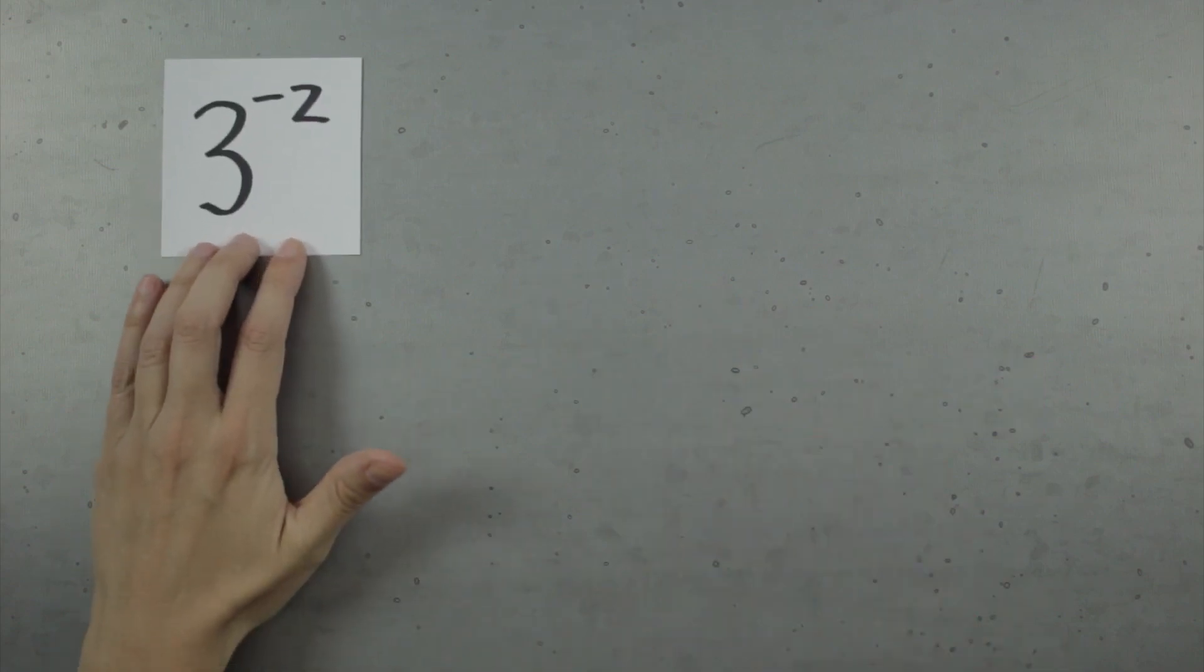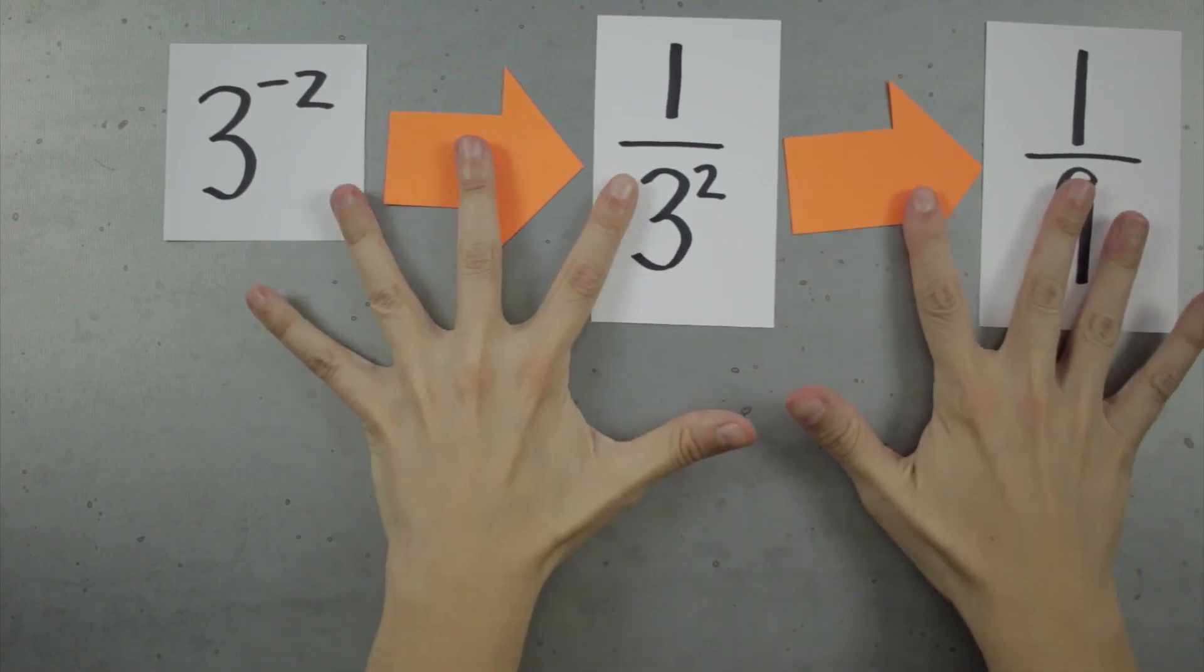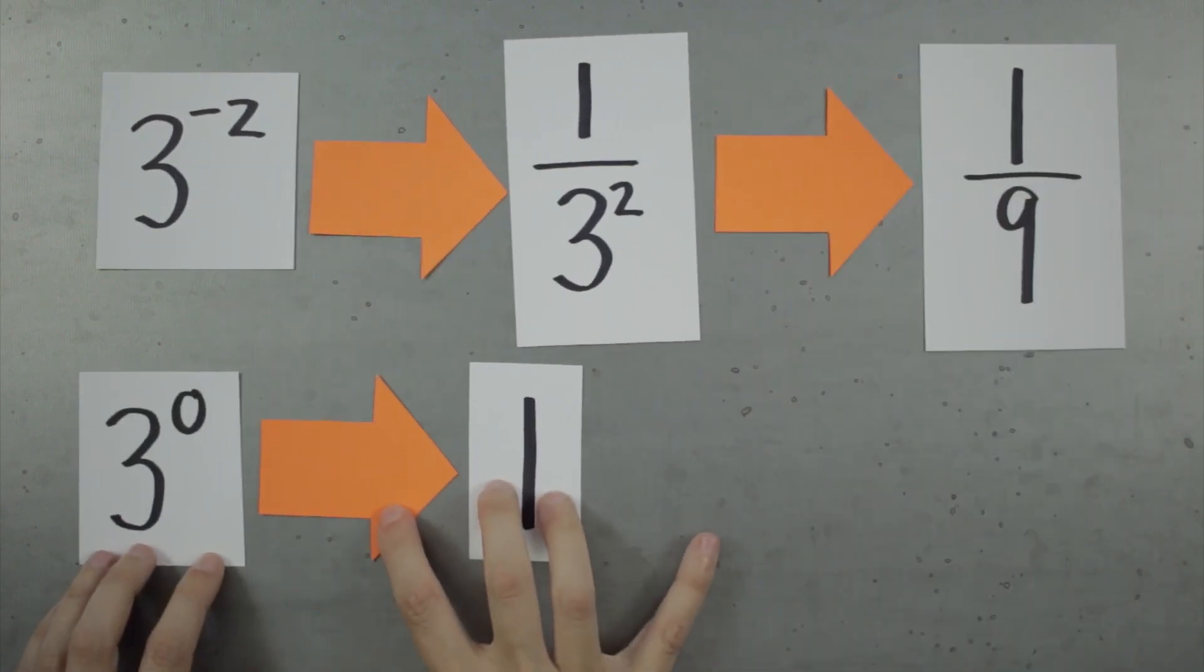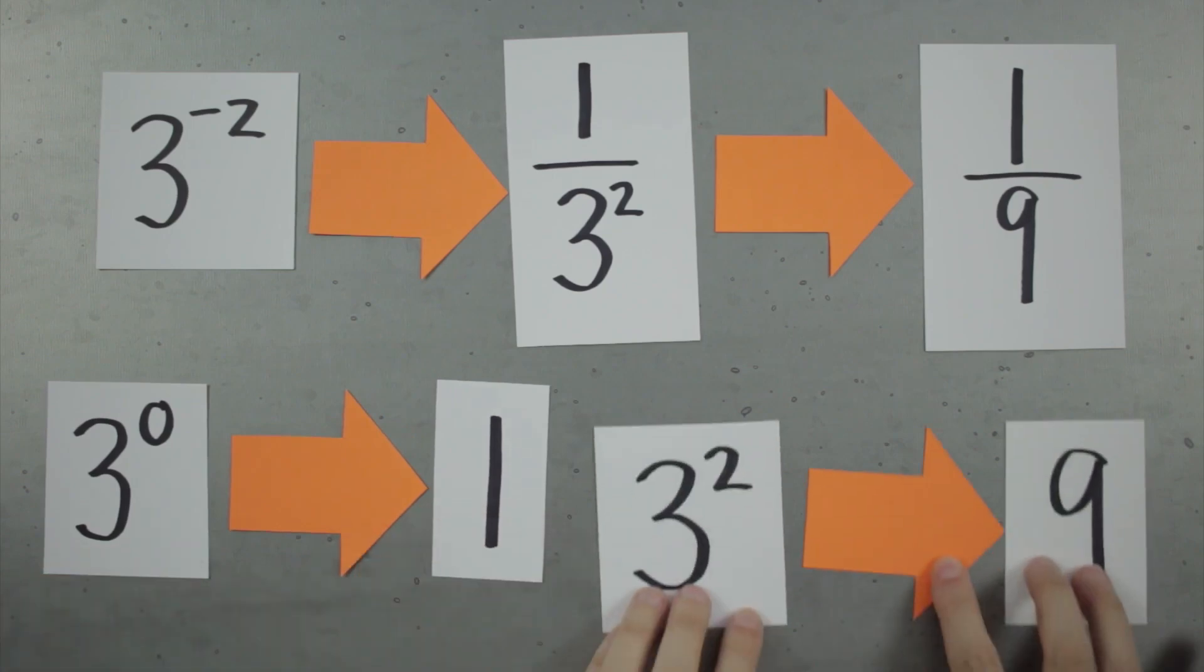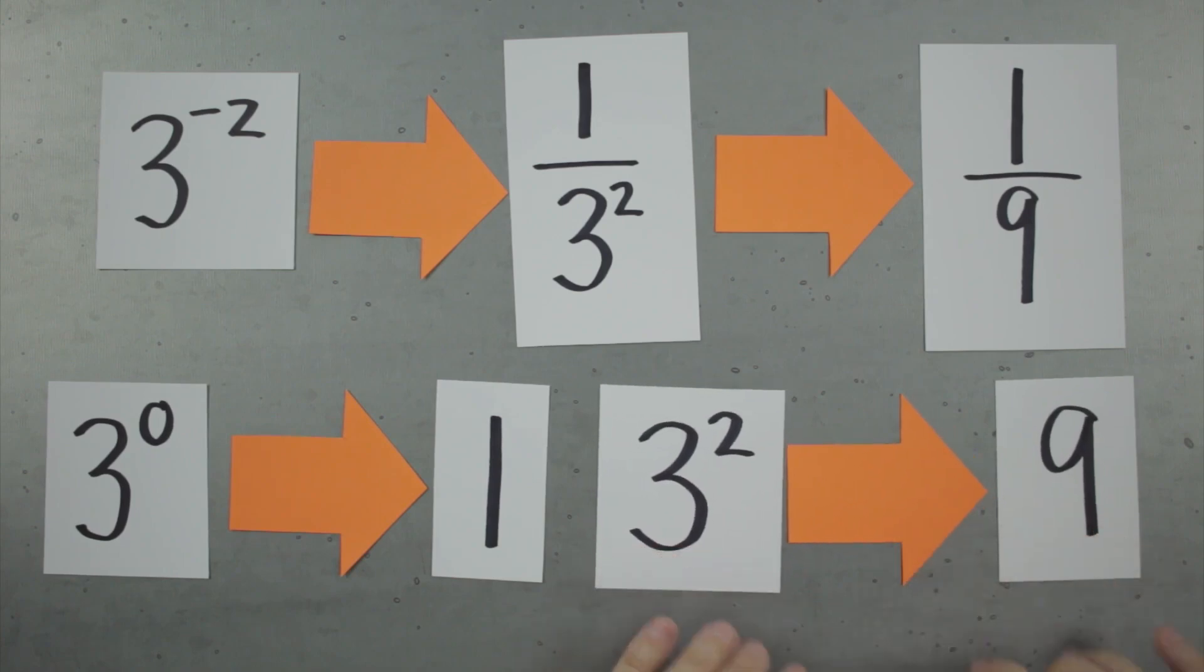Well, when you raise a positive number to a negative number, it just moves that number to the denominator, and you're still going to end up with a positive number. When you raise a positive number to the power of 0, you get 1, a positive number. And when you raise a positive number to a positive number, you're going to get a positive number.